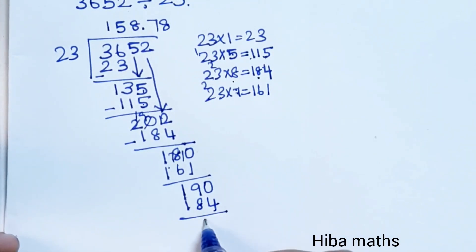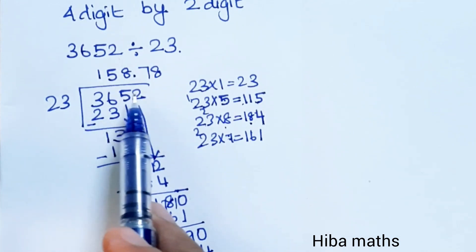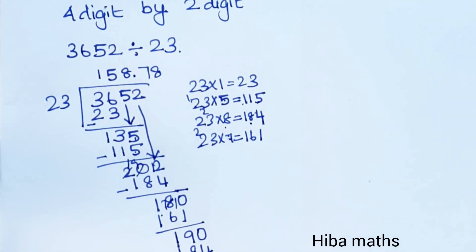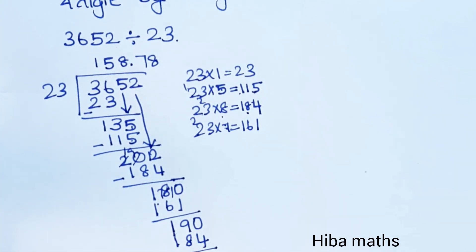23 into 184 is 8 times, with a balance of 6. The final answer is 158.78. Thank you so much.